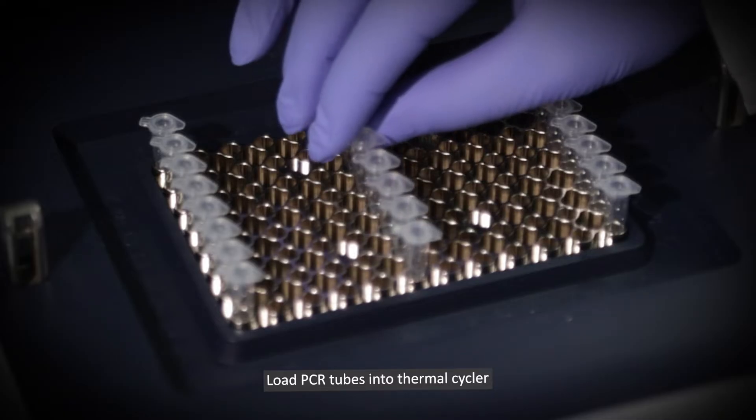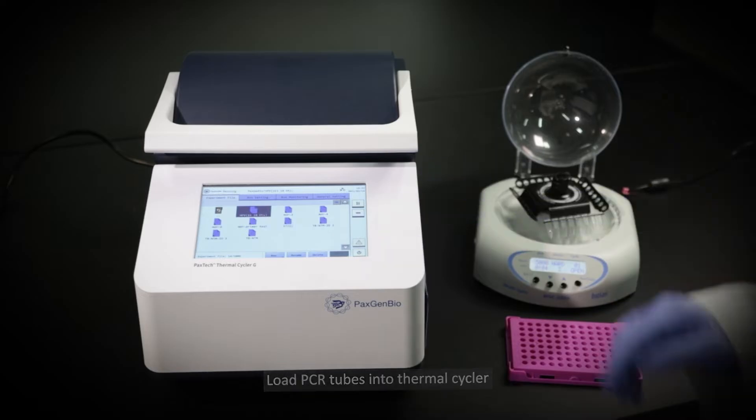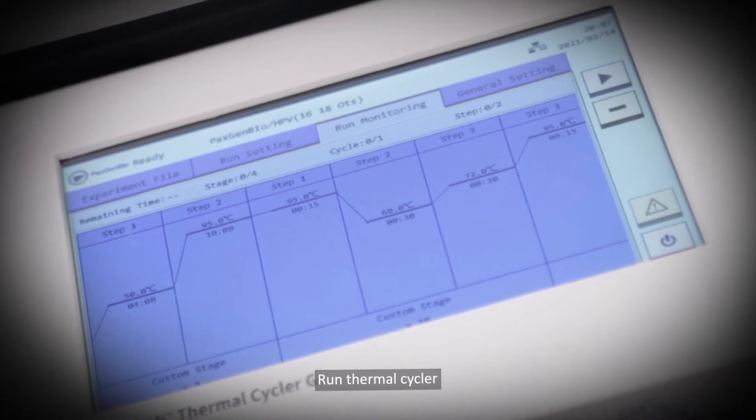Once the centrifuge is done, the PCR tube is placed in a PCR machine. PCR is run with the cycling protocol.